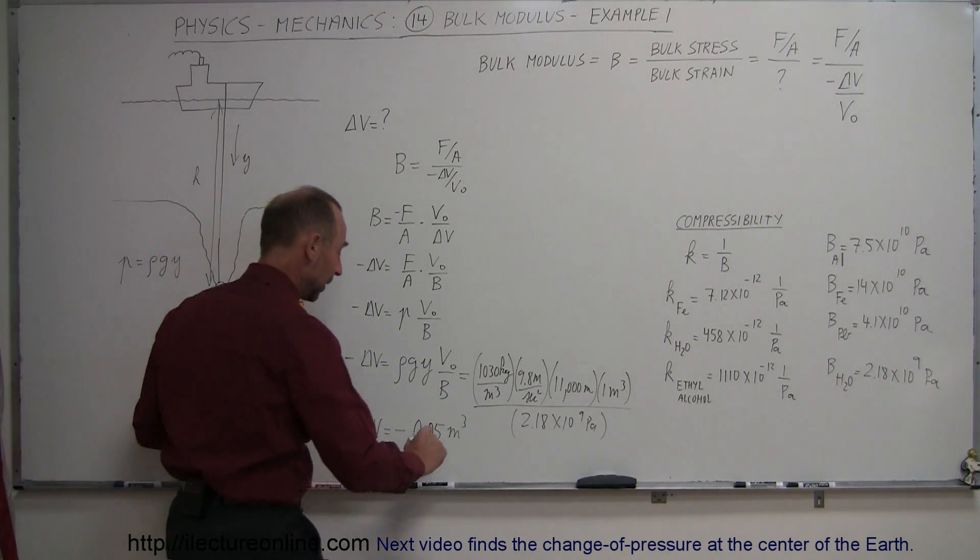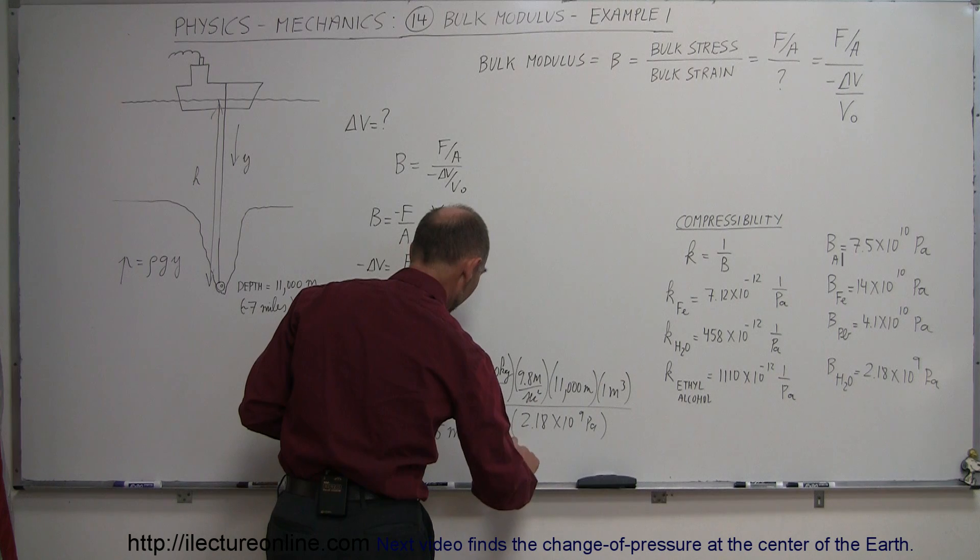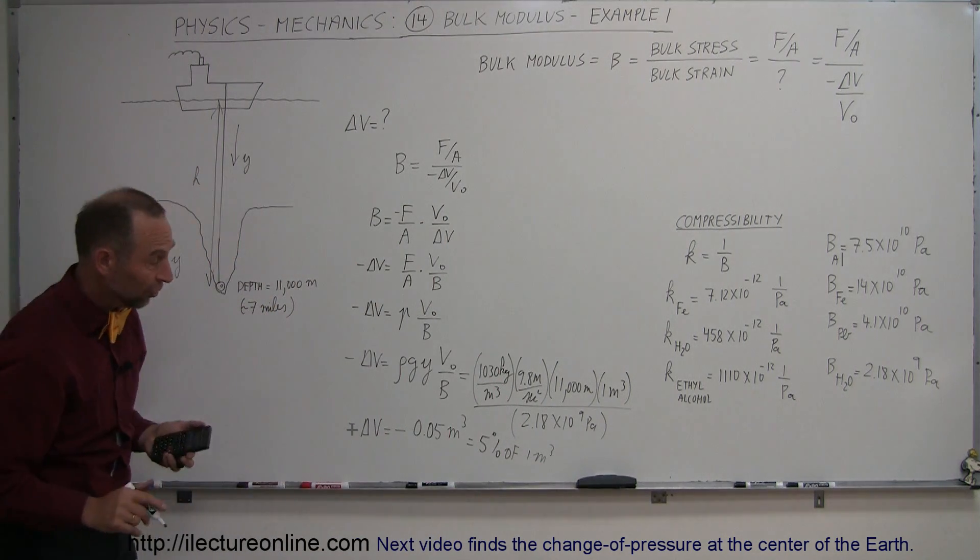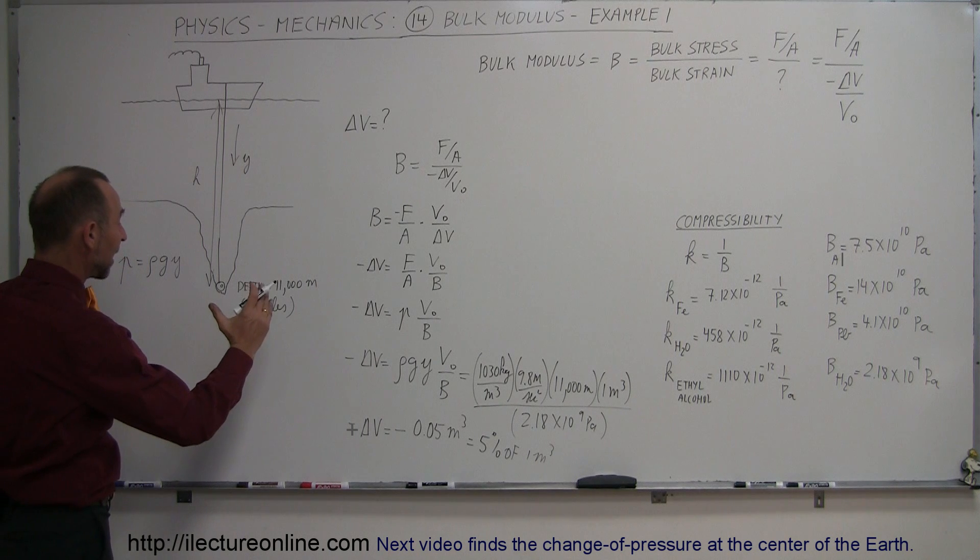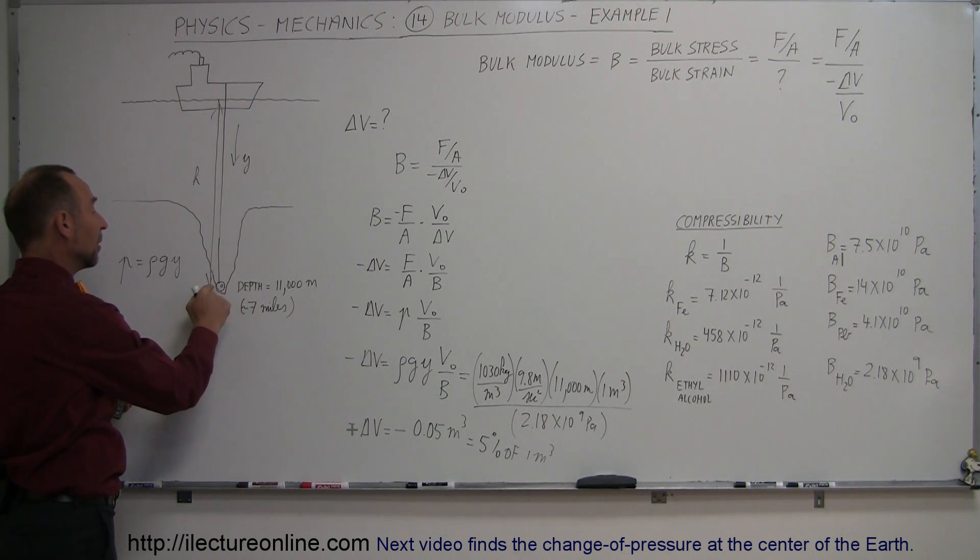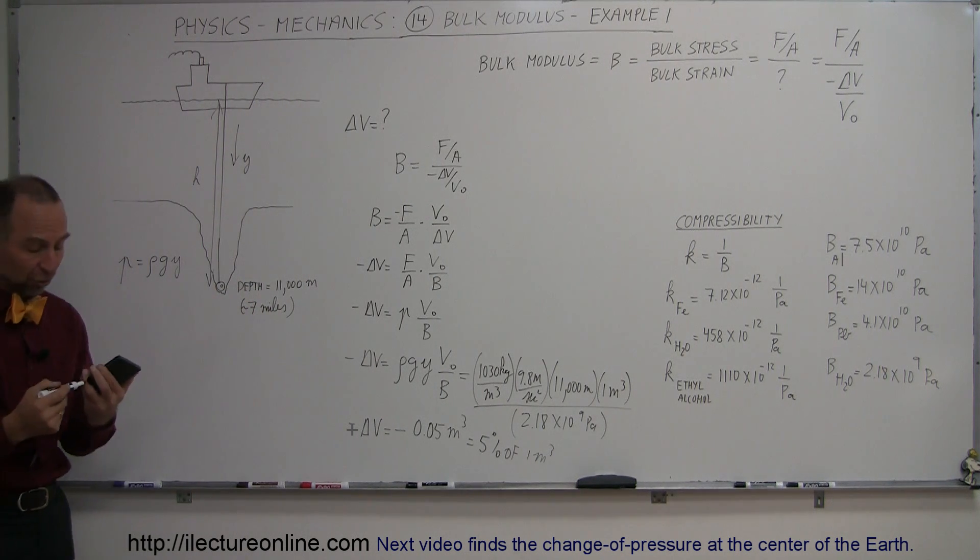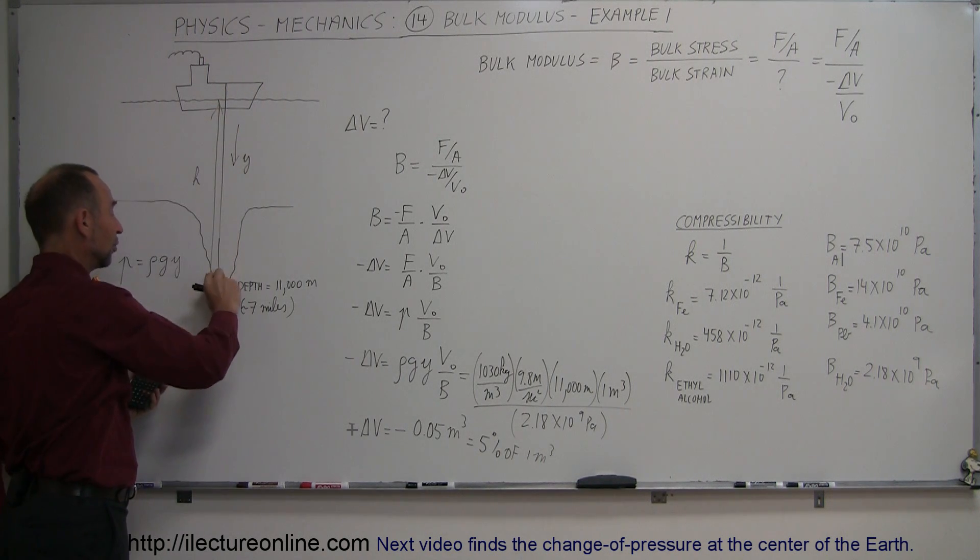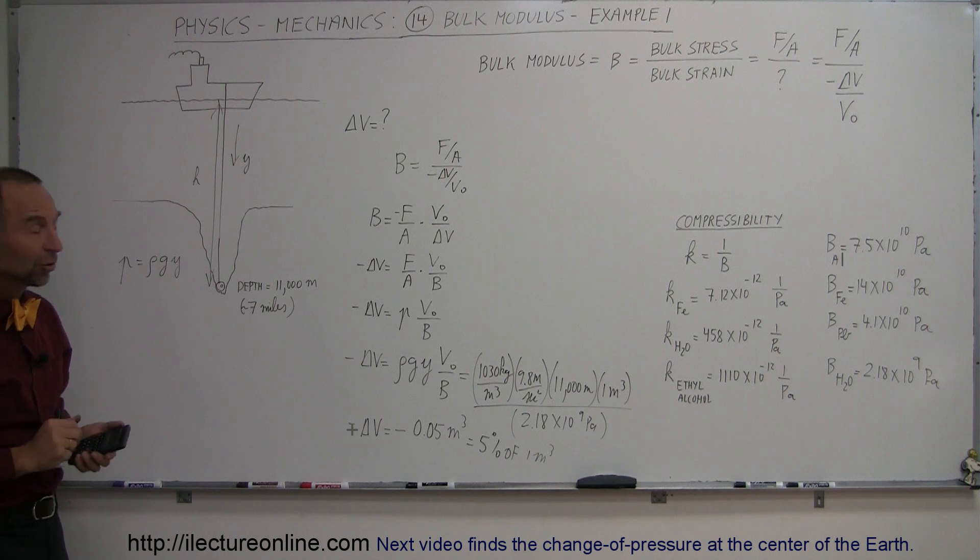So, if the original volume was 1 meter cubed and the change in volume was 0.05 meters cubed, which is, if you think about it, 5% of 1 cubic meter. In other words, the water has been compressed by 5% of its original volume by the time we get to the bottom of the Mariana Trench.